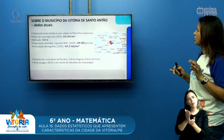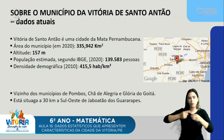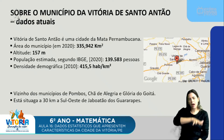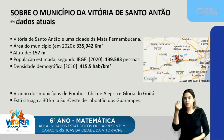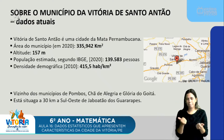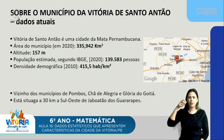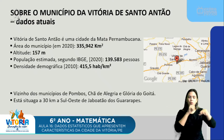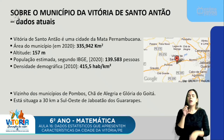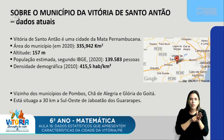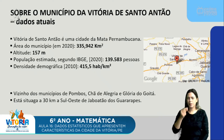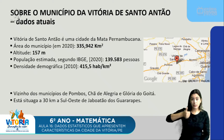Para começar, eu trouxe aqui alguns dados do município, dados atuais da Vitória de Santo Antão. Vitória de Santo Antão é uma cidade da Mata Pernambucana, cuja área territorial — dados de 2020 — é de 335.942 quilômetros quadrados. Fica a uma altitude de 150 metros, ou seja, Vitória está a 150 metros acima do nível do mar. A população estimada, segundo o IBGE, para 2020, é de 139.583 pessoas, quase 140 mil habitantes.